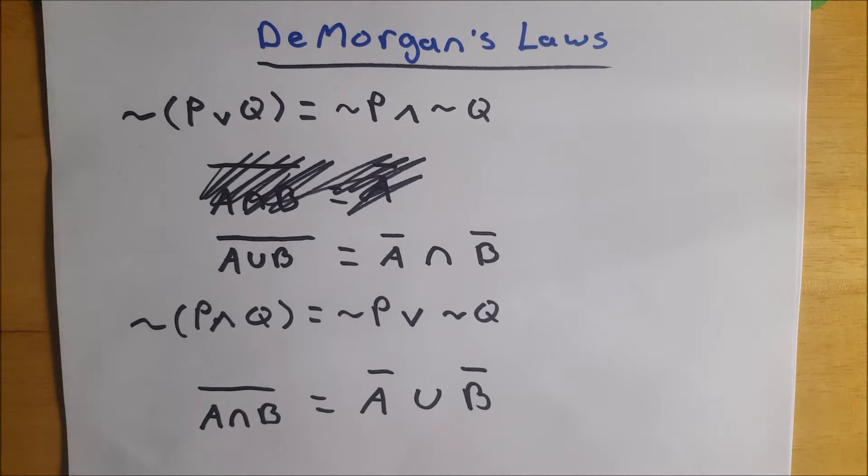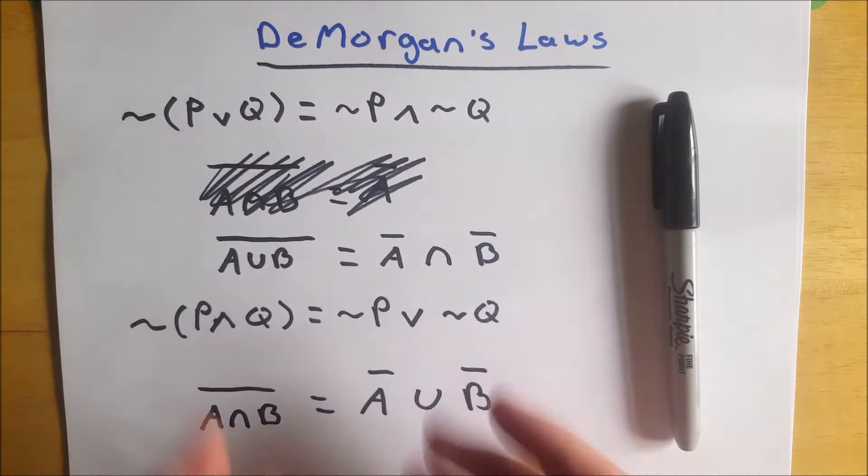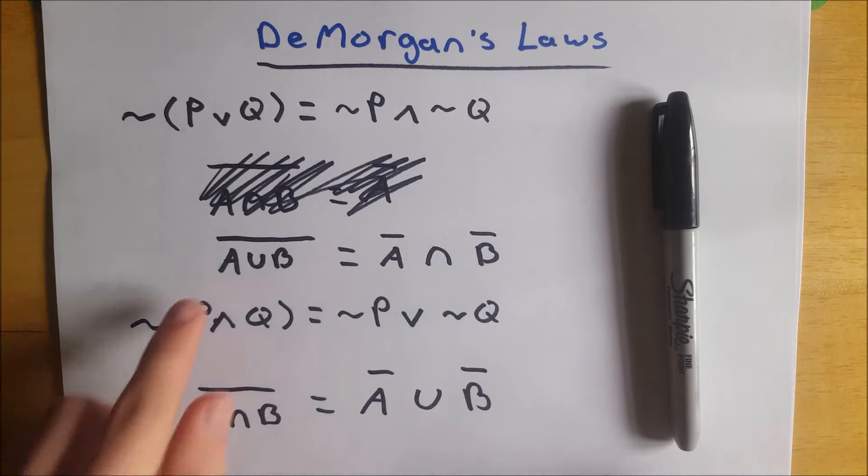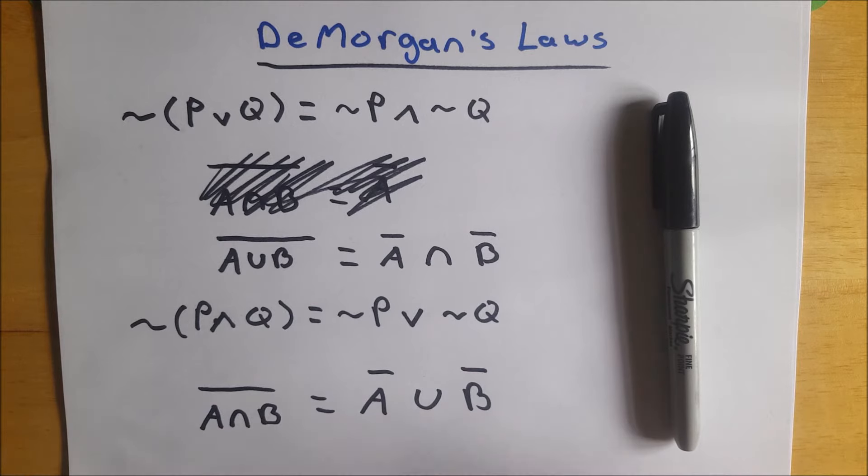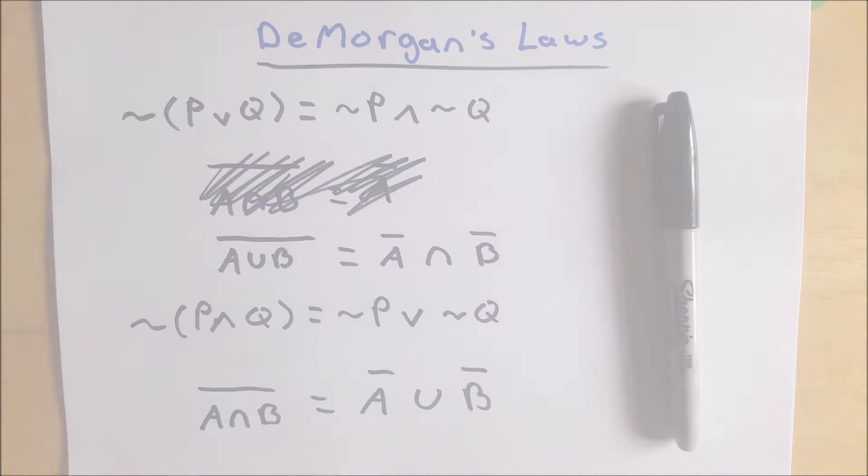So I hope this video helped explain DeMorgan's laws to you, and easy ways to sort of think through them if you ever forget them by memory. And this is also what they look like in set notation. So I hope this helped. Let me know if you have any questions in the comments, or if you would like any other videos, or need anything clarified. I'll see you next time. Thank you very much for watching, and be sure to subscribe for the swankiest math videos on the internet.